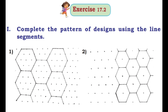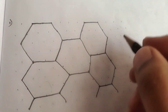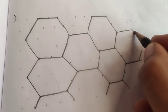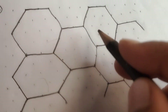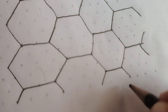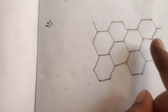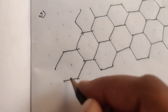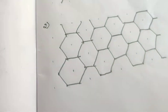Let's go to exercise 17.2. First, complete the pattern of designs using the line segments. The points are given; draw line segments between them to complete the pattern in your notebook. For the first pattern, count the points — one pattern has three points with lines drawn, so count them: one, two, three. Each set has six points; draw lines between all six points to complete the pattern. For the second pattern, there is one point in the middle; draw line segments to complete that pattern neatly using a pencil.